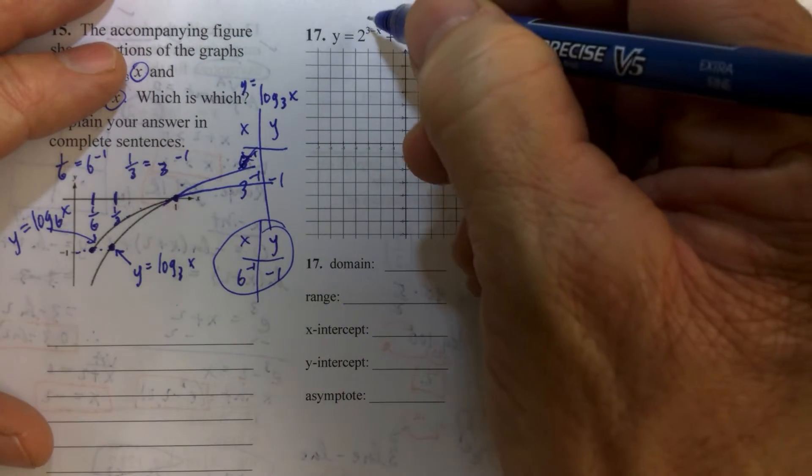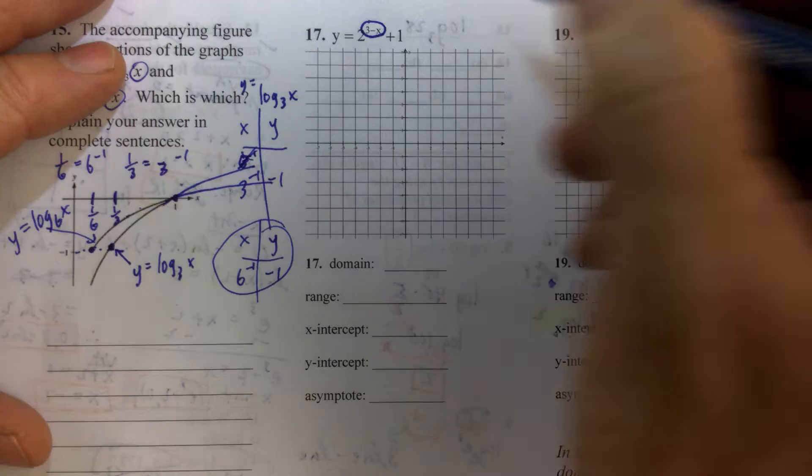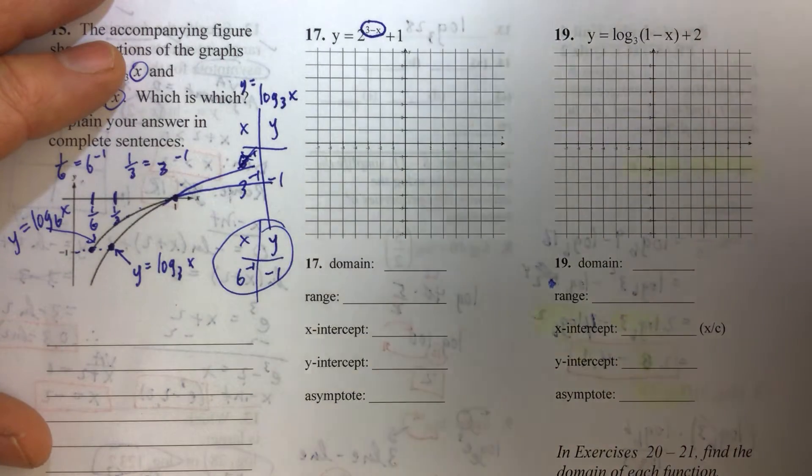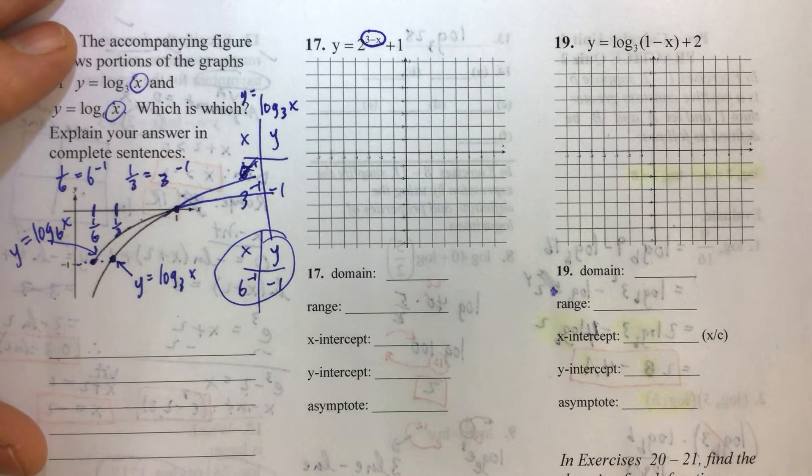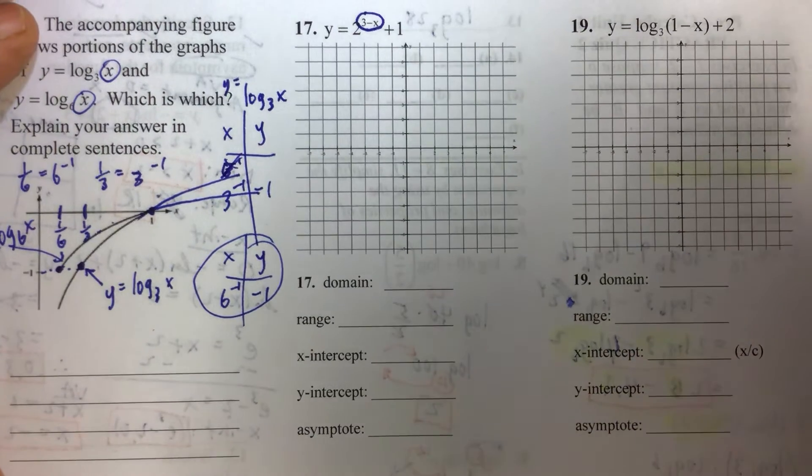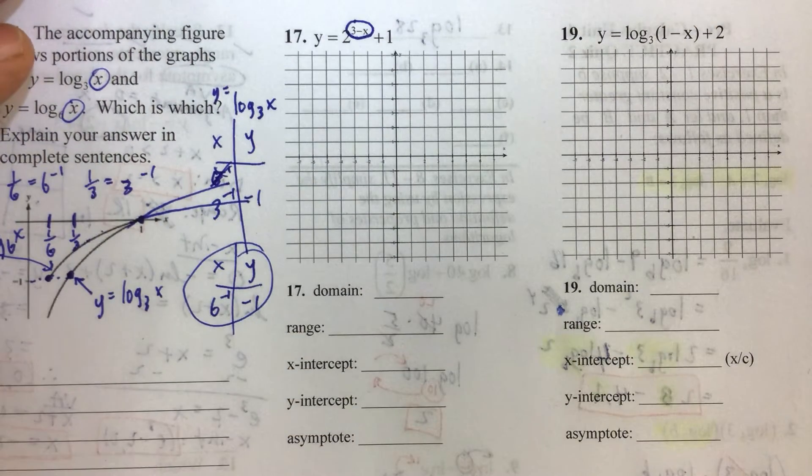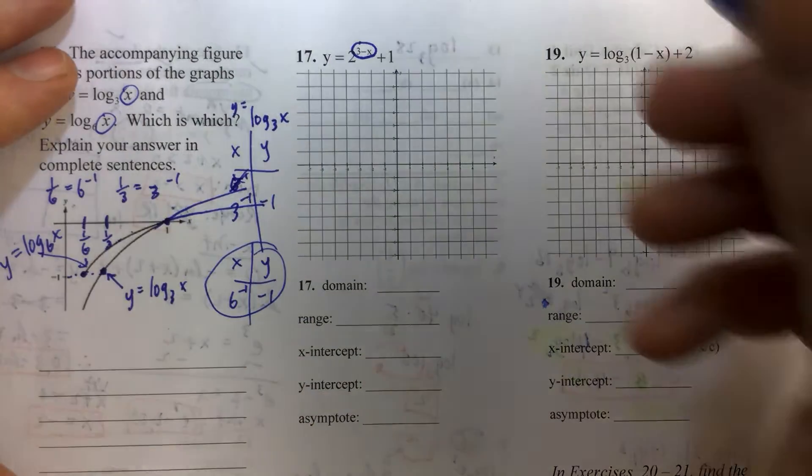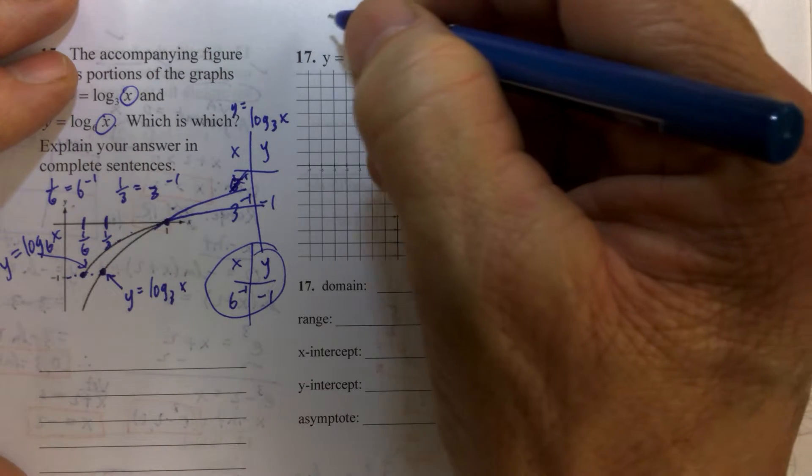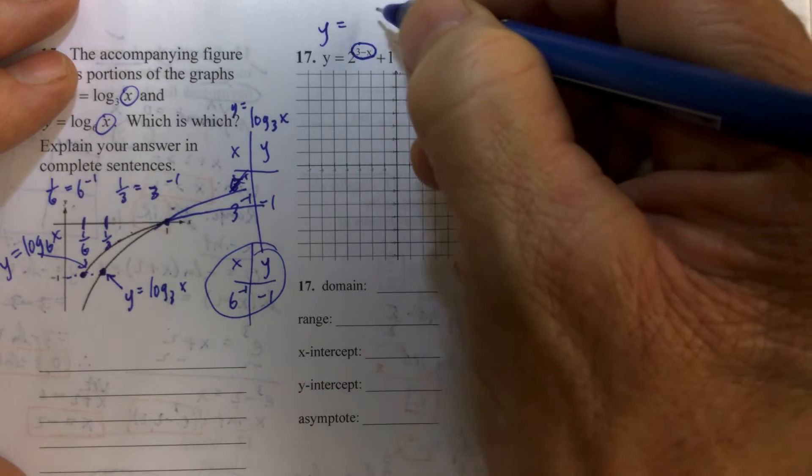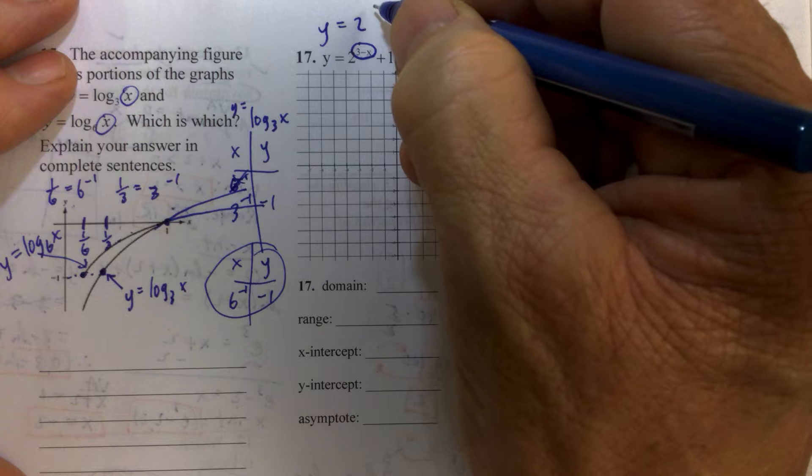For number 17, we have to be really extra careful about when our exponents are like that. So like that meaning you have 3 minus x. I'll show you why that's a little tricky here.